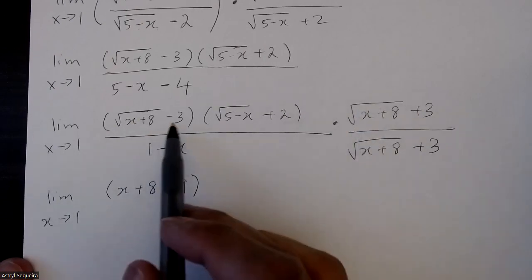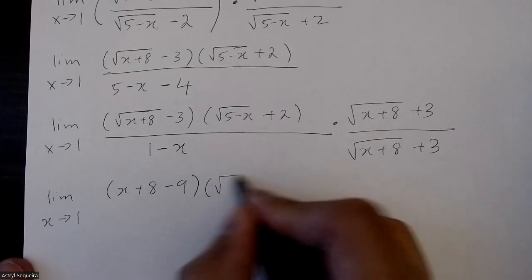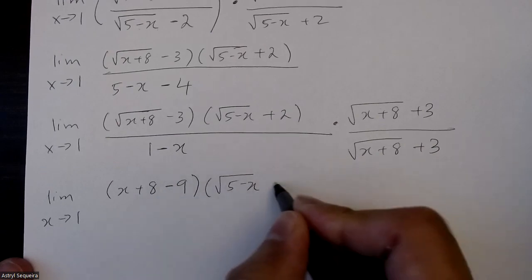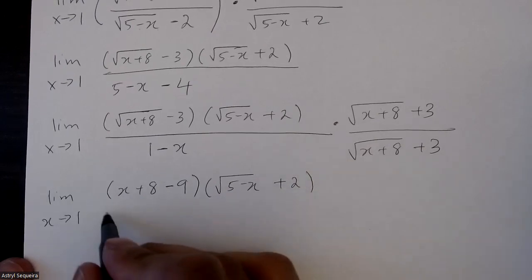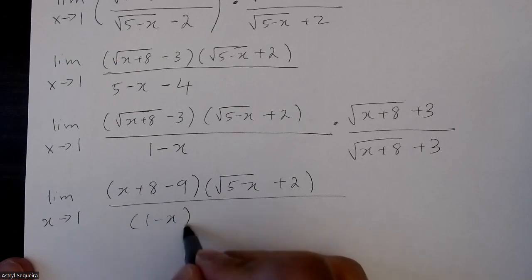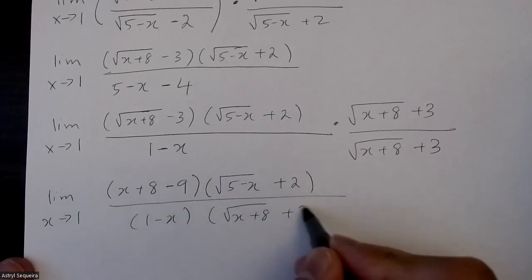I did this times this and this times that. Second bracket is going to remain exactly the same. No change there. And the bottom is now going to be 1 minus x root x plus 8 plus 3.